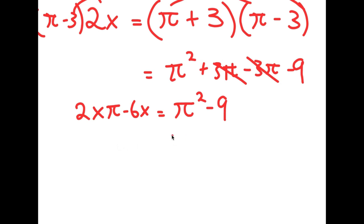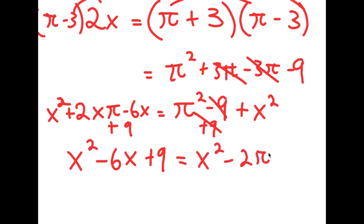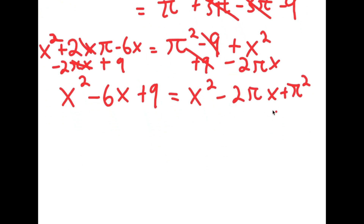Now from here, I'm going to add x squared on both sides. So I have x squared plus 2x·pi minus 6x is equal to pi squared minus 9 plus x squared. Let me reorder this: I'm going to write x squared minus 6x plus 9 — adding 9 on both sides — is equal to x squared minus 2·pi·x, subtracting 2·pi·x on both sides, plus pi squared.